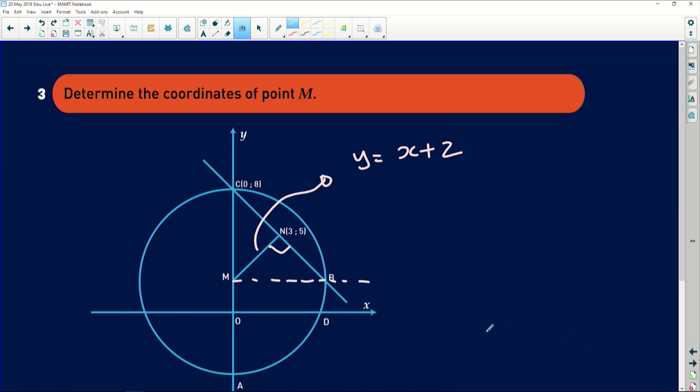We need the coordinates of M, so this is a very simple question indeed. The coordinates of M: since M lies on the y-axis, it's clear that the x coordinate is 0, but we don't know what the y coordinate is. If you apply the y-intercept on the equation of the straight line we're dealing with, the y-intercept when x is 0, the y value is going to be 2.